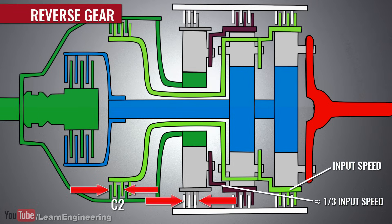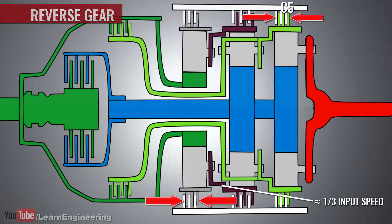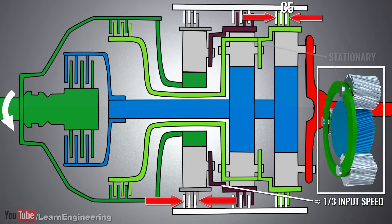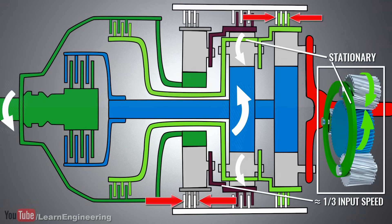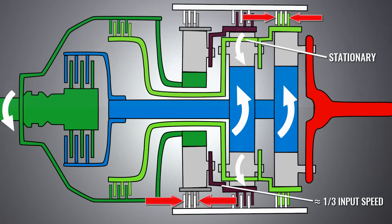The reverse is an interesting mechanism. Here, C5 is applied along with C3. So here, the carrier of the second set is stationary. This means that the planet gears of this set will not be able to revolve and that they will simply spin. This spin is in the same direction as the input. This planetary spin will make the corresponding sun gear spin in the opposite direction. As a result, the output sun gear will also turn in the opposite direction and we will get the reverse gear.